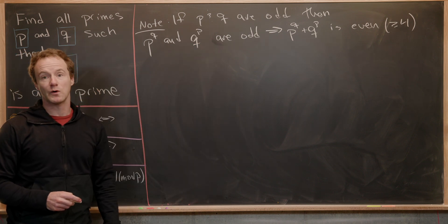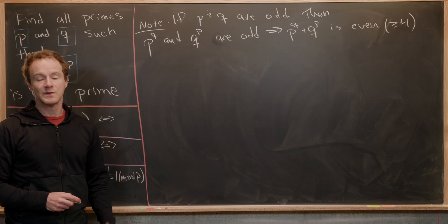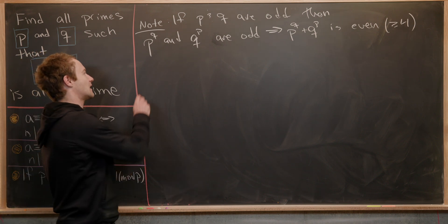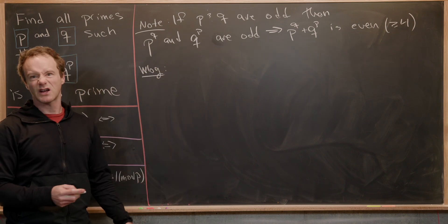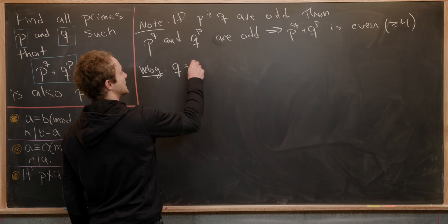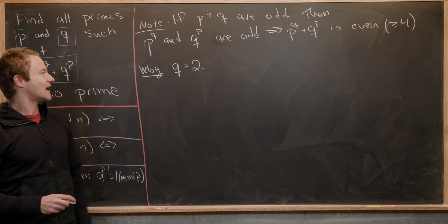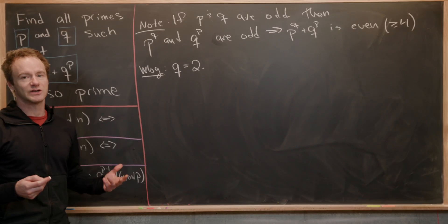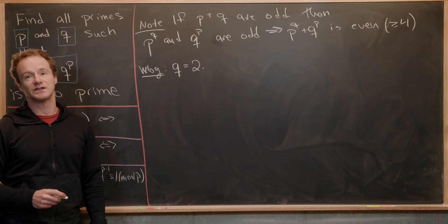So p and q cannot both be odd, which means one of them must be an even prime. But there's only one even prime, and that's the number two. So without loss of generality, we know that one of these is even, let's call it q. So we've got q is an even prime, which again is the number two. Now that we've got this setup, maybe we can make a chart to get some sort of guess going for the values of p that make this object still a prime given that q is equal to two.